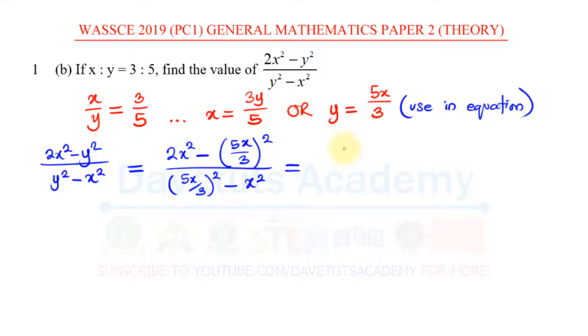We can further go ahead to simplify this by saying this is the same as having 2x squared minus 5 raised to power 2 is 25, then we have this x squared over 3 raised to power 2 is 9. And we can divide by 5 raised to power 2 again is 25, we have the x squared divided by 3 raised to power 2 which is 9, then minus x squared. If you look at this, we can take this to be a numerator over a denominator.